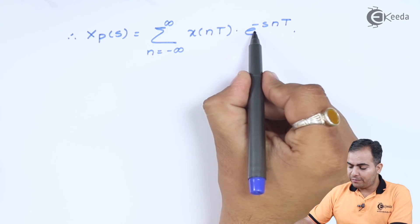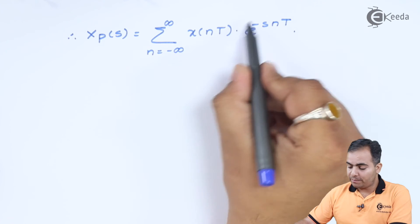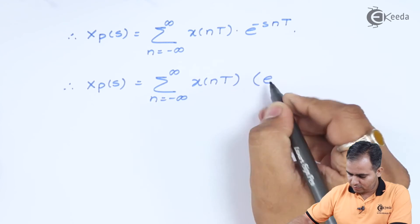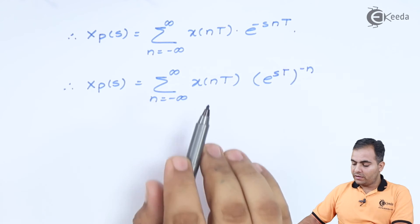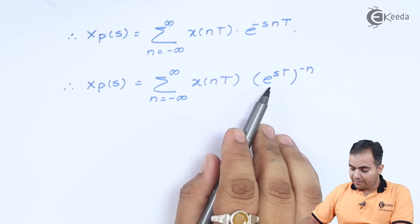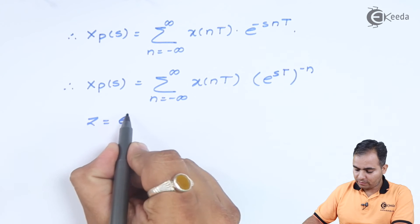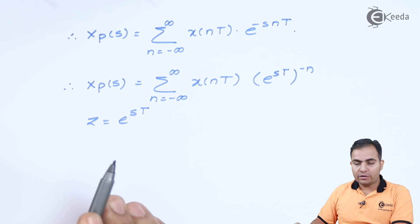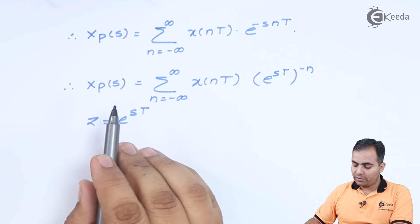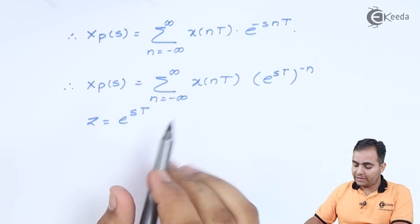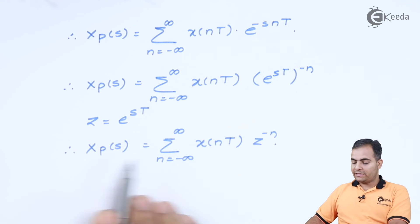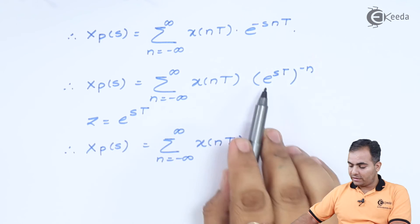From here, if I write minus n in the power of e to the power of sT, this equation takes a recognizable form. This is in the form of a Z-transform. If we substitute z equals e to the power of sT, then this whole equation can be considered as the definition of the Z-transform.